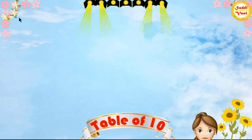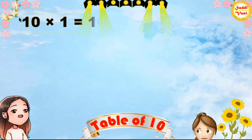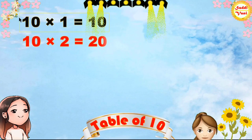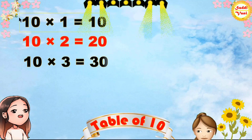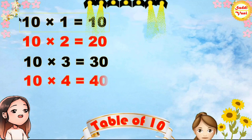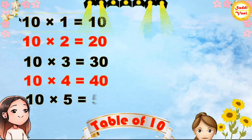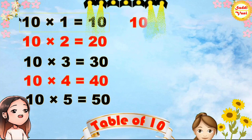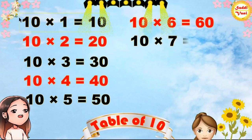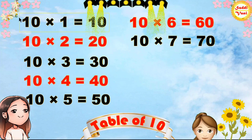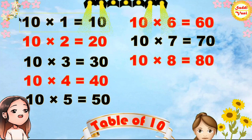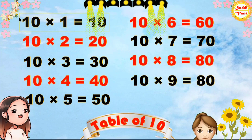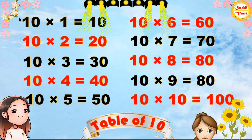Once again: 10 × 1 = 10, 10 × 2 = 20, 10 × 3 = 30, 10 × 4 = 40, 10 × 5 = 50, 10 × 6 = 60, 10 × 7 = 70, 10 × 8 = 80, 10 × 9 = 90, 10 × 10 = 100.